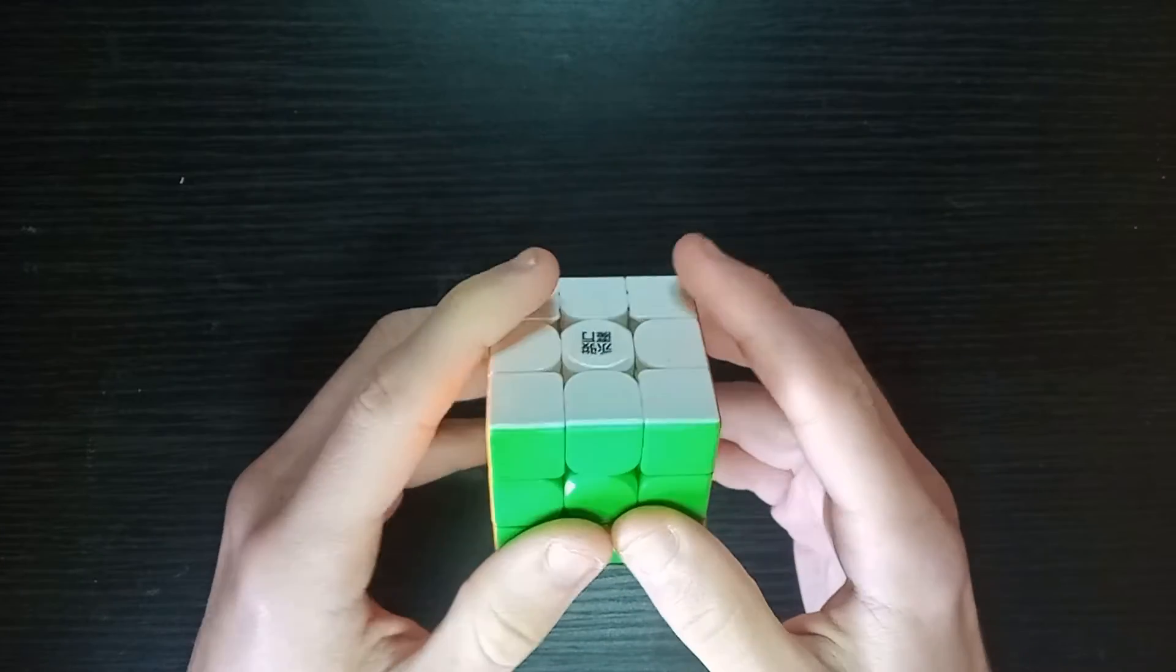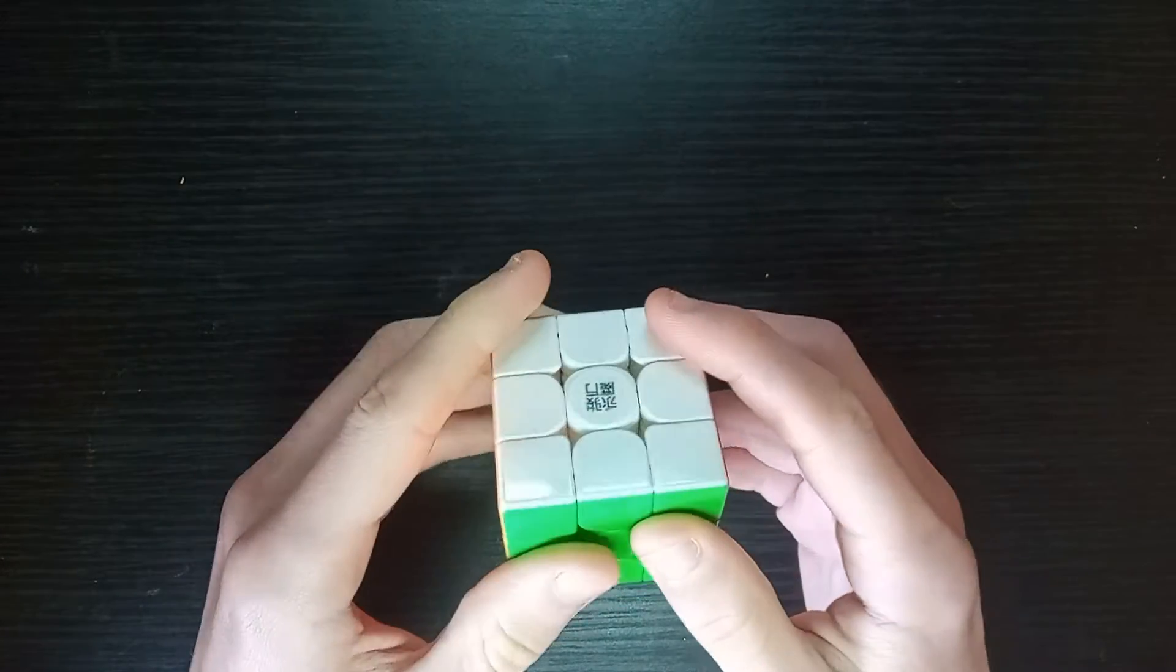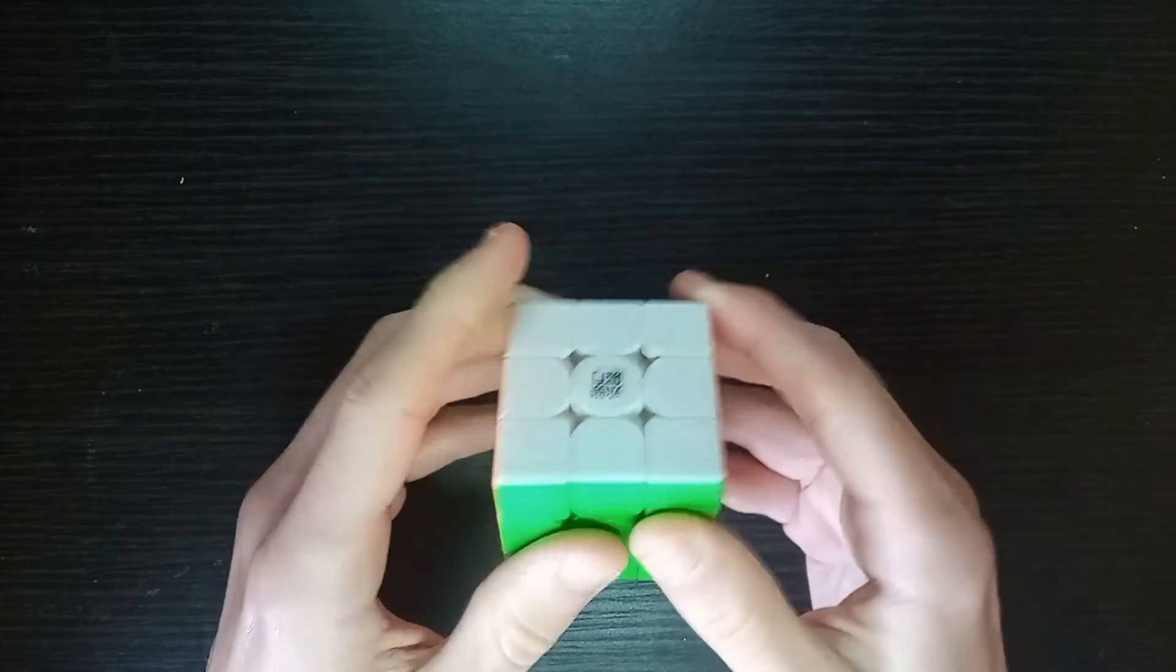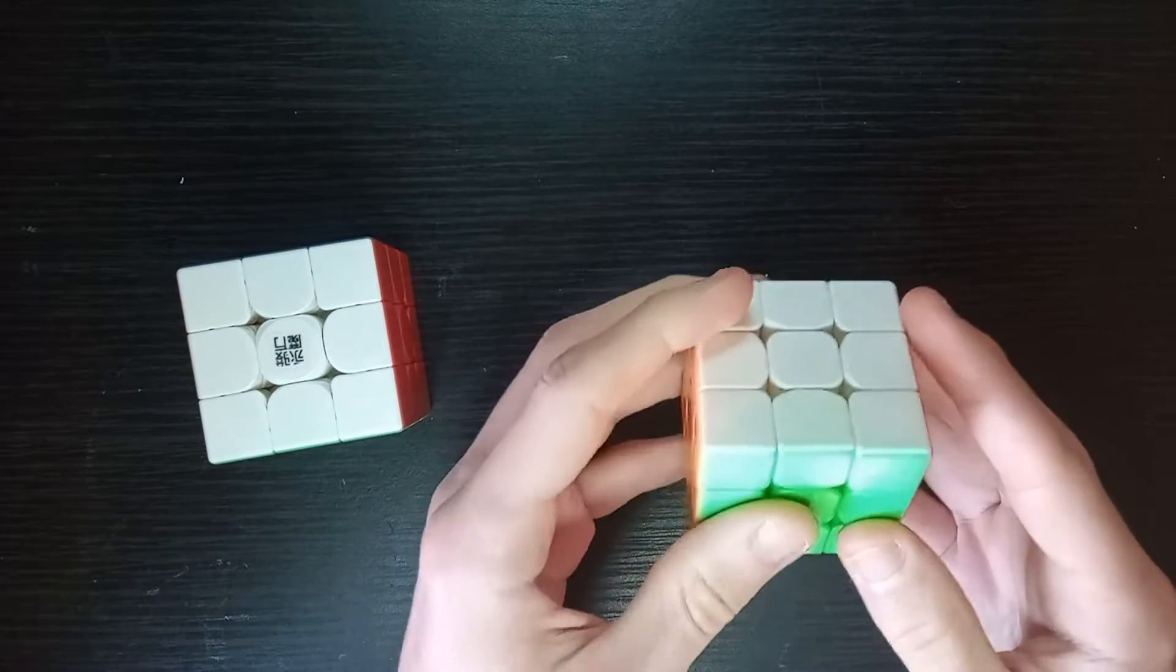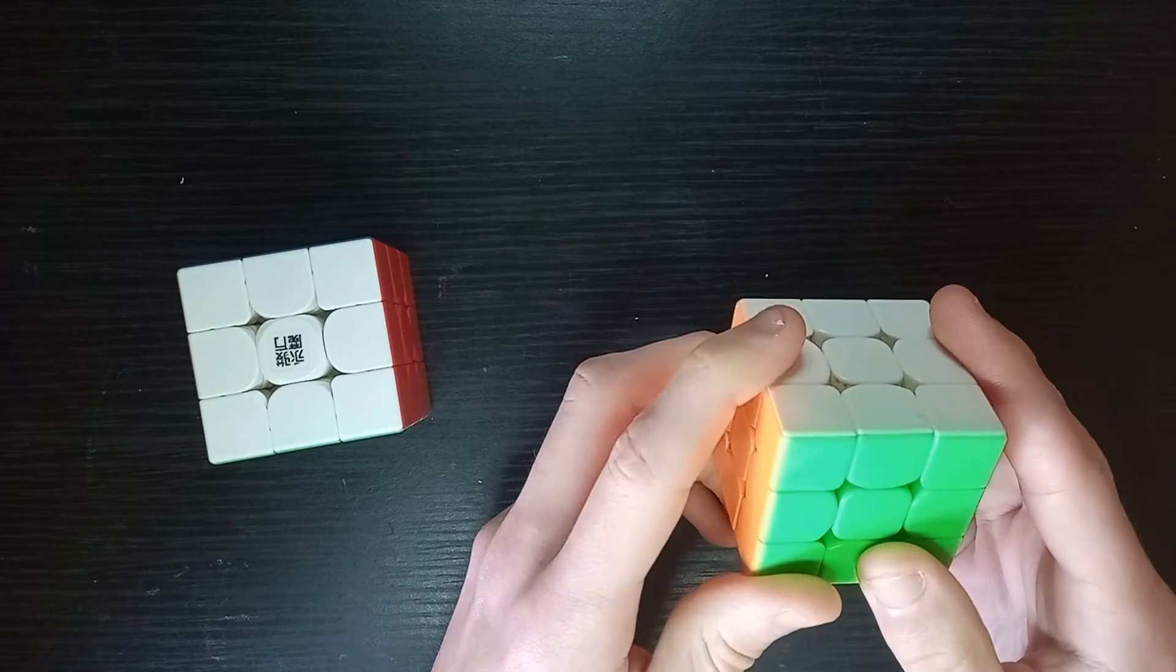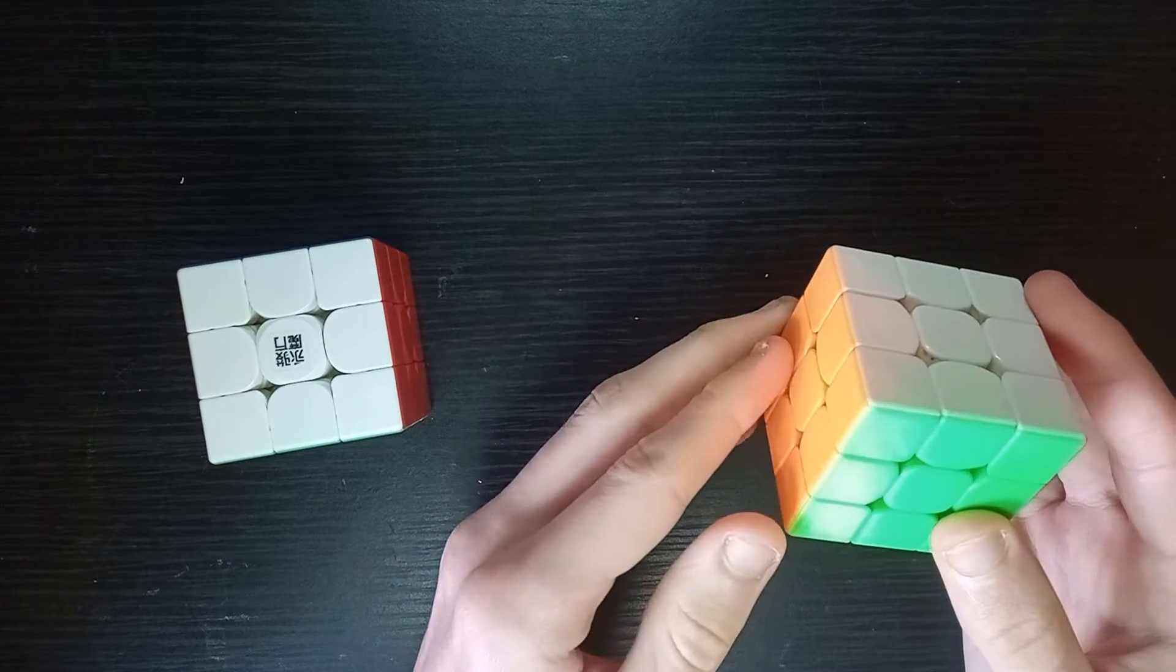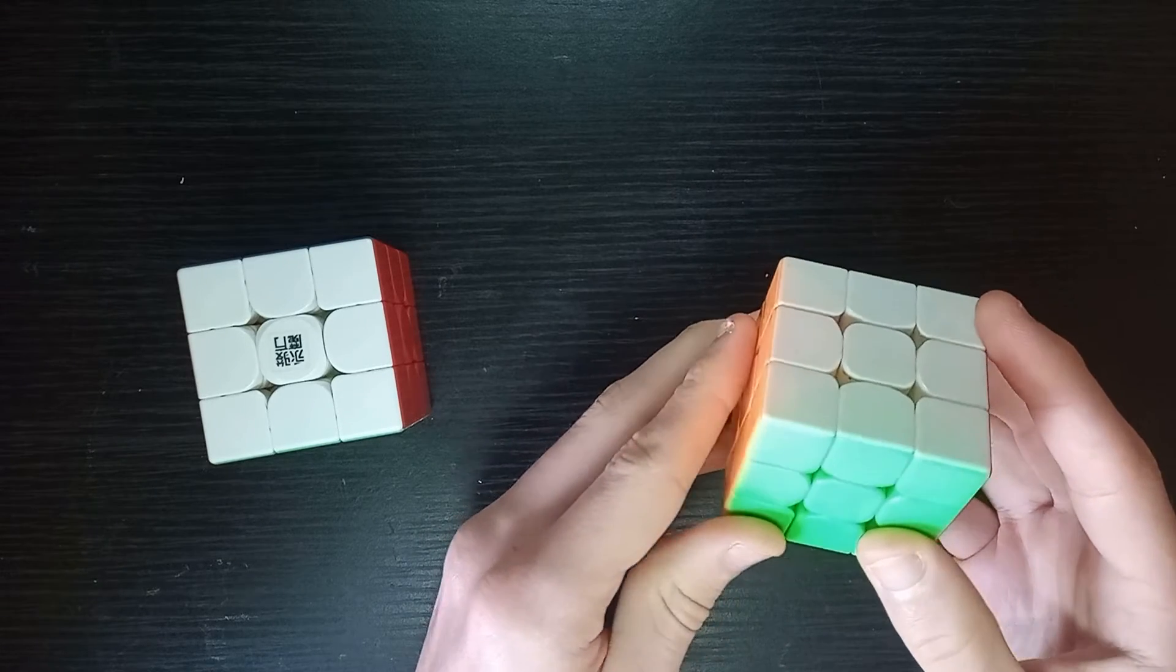The YJ Zilong 3x3 is the first mass-produced magnetic 50mm 3x3. We also have the Mofang Jiao-shi 50mm 3x3 that came out two or three years ago, which was part of a series of smaller cubes, all with the same design.